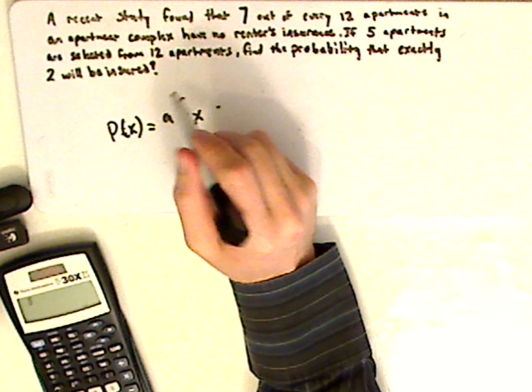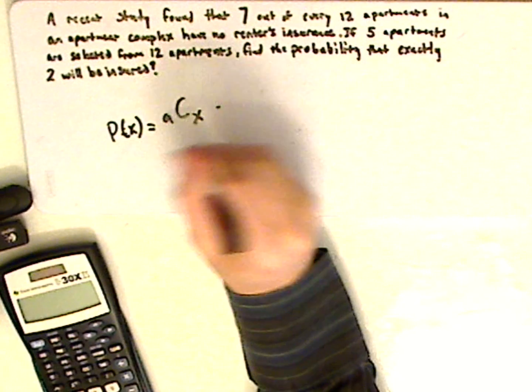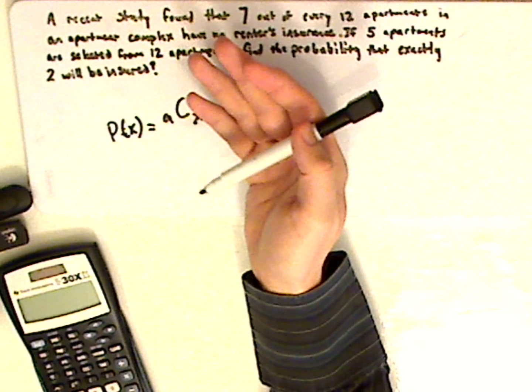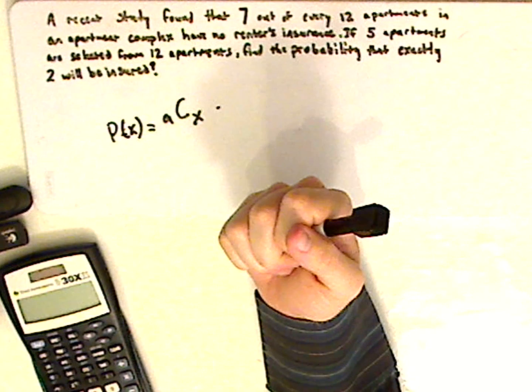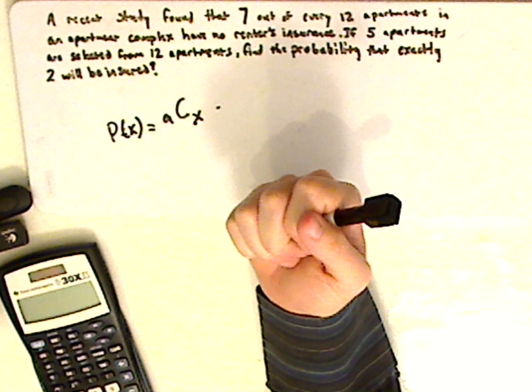Now, when it comes to a hypergeometric distribution, what you're doing is you have 2 sets of the population, and then you're choosing from those 2 sets only. That's your sampling, and it's without replacement.